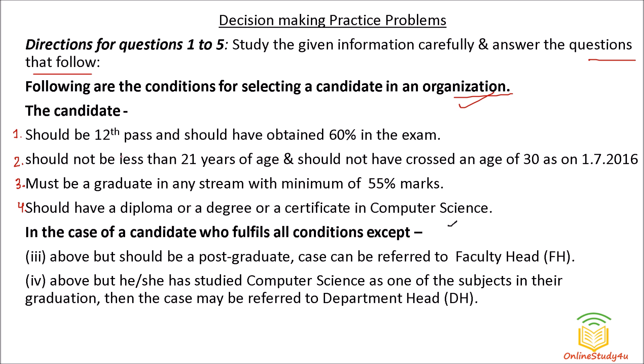Condition one: the candidate should be 12th pass and should have obtained 60 percent in the examination — so in 12th, 10th, and graduation, throughout you should have 60 percent. Condition two: there should not be any current backlogs, or not more than one backlog when writing the examination. There should not be more than two years of gap when writing the examination.